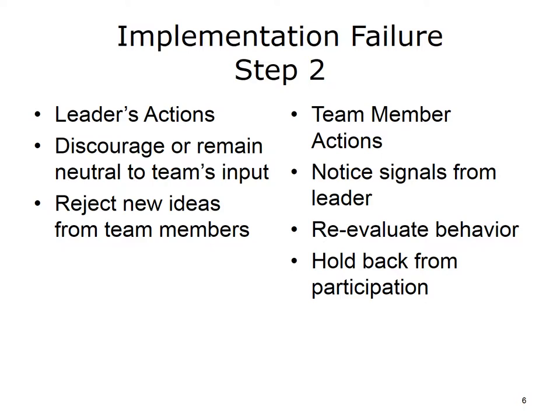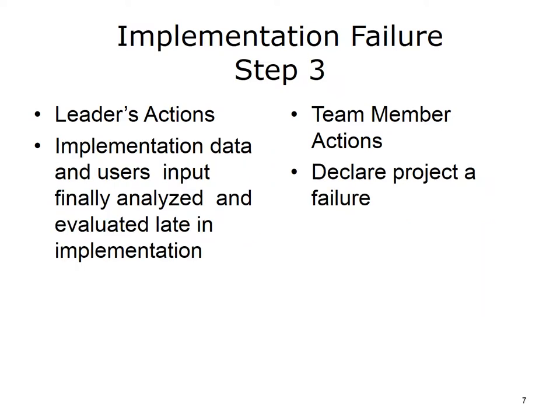The second step to ensure implementation failure is when the leader ignores ideas and input from the team. If the leader responds "I'll add that to my list" every time a team member makes a suggestion but never writes it down, the team will notice. It won't be long before team members keep their questions and suggestions to themselves and silently rubber stamp everything the team leader proposes. Finally, step three: the leader wisely collects data and user input, but then doesn't analyze it until it's way too late to prevent implementation failure. At this point, team members — probably at the end of their rope — will declare the project dead or a failure.